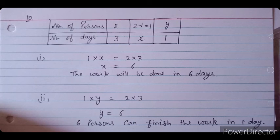In the next part, how many persons would be needed to finish the work in one day? With day = 1 and persons = y, vertical multiplication gives: 1 × y = 2 × 3 = 6. So y = 6 — six persons are needed to finish the work in one day.